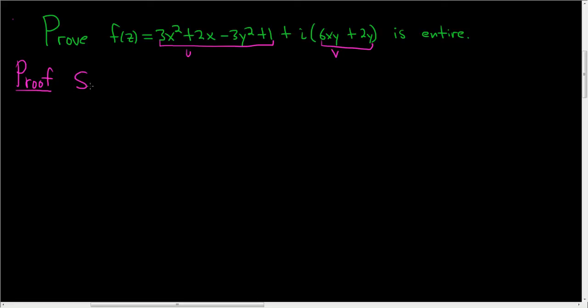So set u(x,y) equal to 3x² + 2x - 3y² + 1. And we'll set v(x,y) equal to the imaginary part, so 6xy + 2y. Then let's look at the partial derivatives and see if we can make the Cauchy-Riemann equations hold.